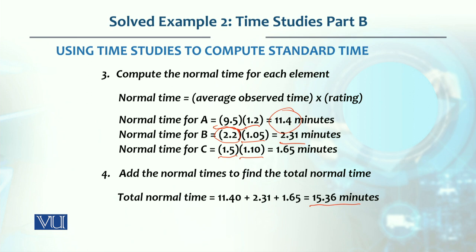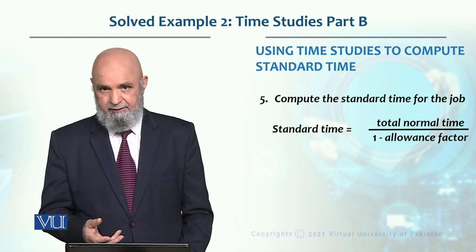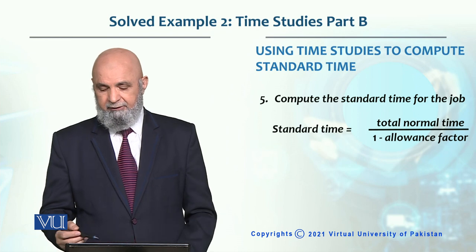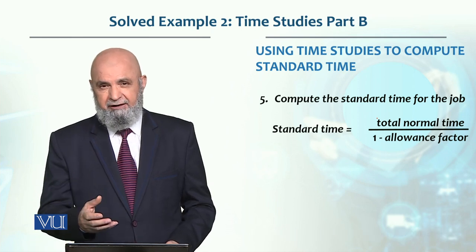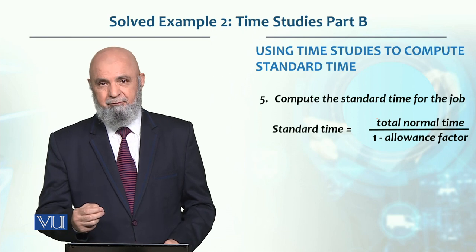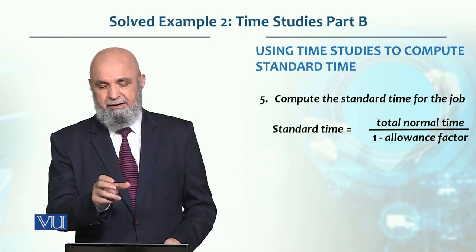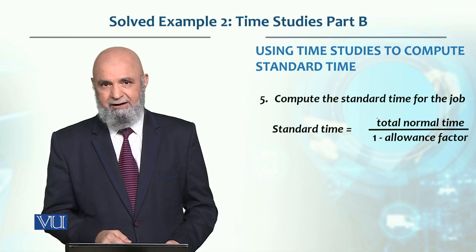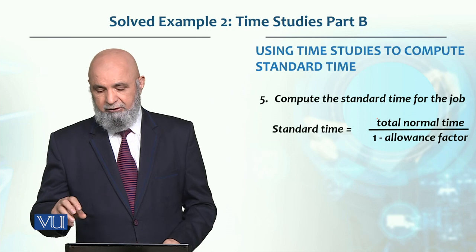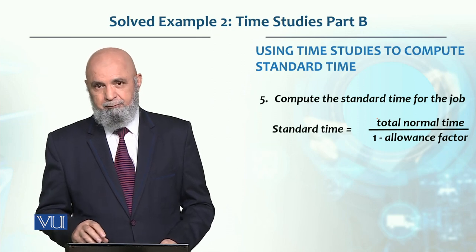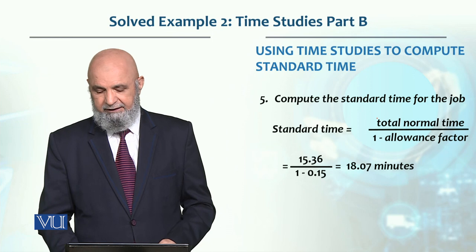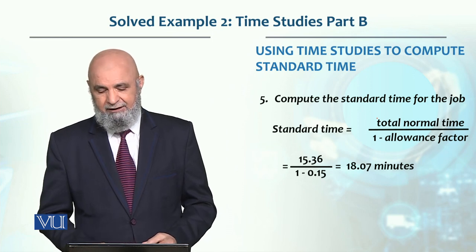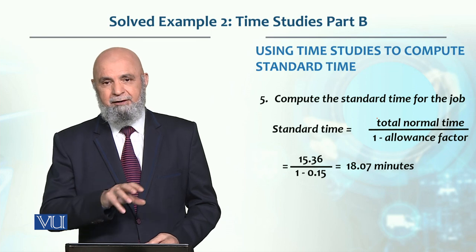Now we need to incorporate the allowance factor. The total normal time is divided by one minus the allowance factor. The allowance factor given is 15% (0.15). So total normal time divided by one minus 0.15 equals 15.36 divided by 0.85, which gives us 18.07 minutes.